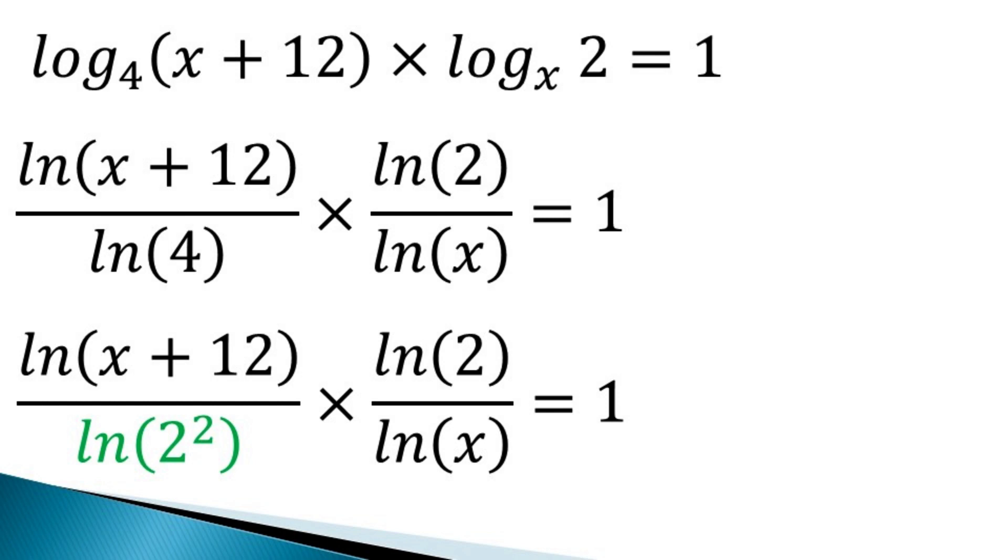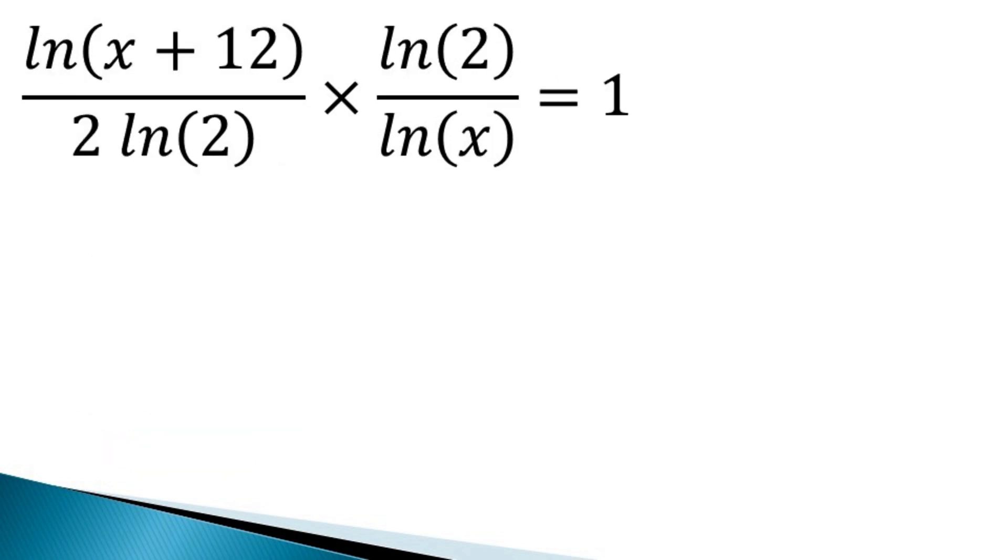Now for ln 2 square, we use power law of log. So it makes ln 2 square as 2 ln 2 in the denominator. And in the denominator and numerator, ln 2 is occurring. So both get cancelled.